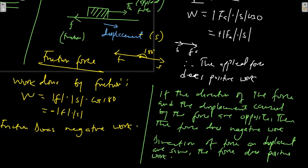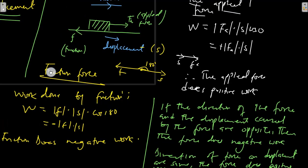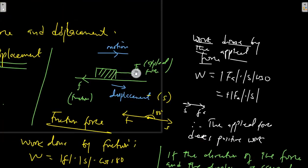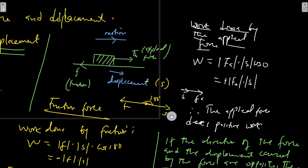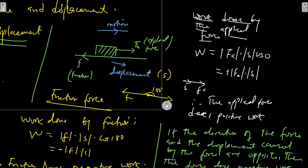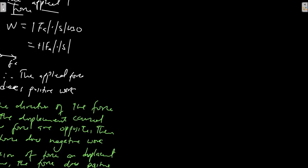As you can see in our case study of friction and the applied force: the applied force and the displacement are in the same direction, so the applied force does positive work. The concept of the sign of work done is very important because it helps us to know whether the displacement caused by the force was in the same direction or not. Let's have another quick example about electrostatic forces.